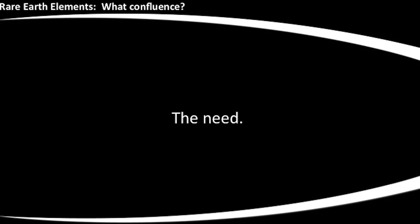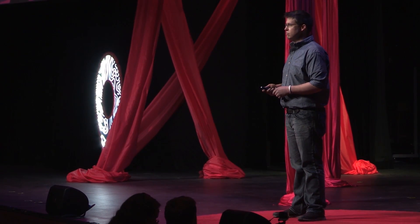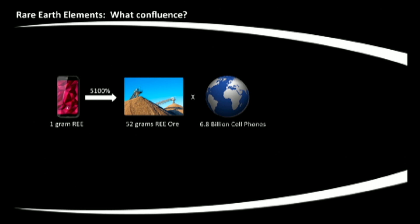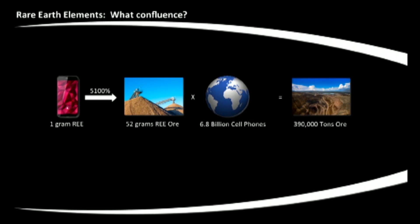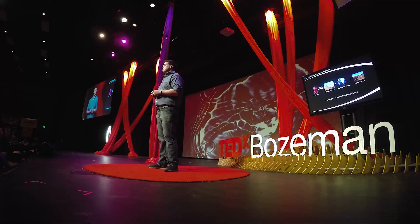What is the need? In one cell phone, there's one gram of rare earth elements. At the best recoveries, you have to mine 52 grams of rare earth ore. Multiply that by the 6.8 billion cell phones in the world — which is more than the 6 billion people, so infants have a lot of cell phones now. That results in 390,000 tons of ore, roughly equivalent to five Nimitz-class aircraft carriers — some of the largest ships that roam our oceans, which are also heavily dependent on rare earth elements. That's just our cell phones. Imagine our infrastructure grids, our laptops, our iPads — lump all this together and that number goes up astronomically.